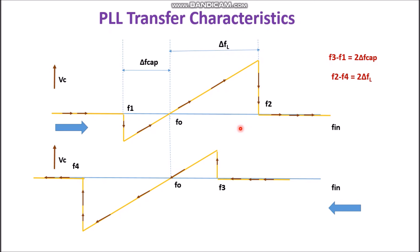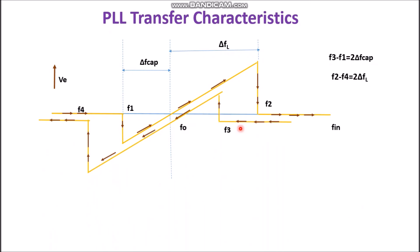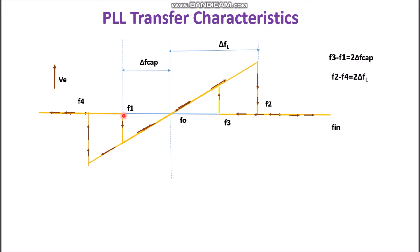Both transfer characteristics can be overlapped to show the combined transfer characteristic we have seen earlier. What we observe is that the PLL cannot acquire a signal outside the capture range — that is, F1 when increasing and F3 when decreasing. But once captured, it will hold on until the signal frequency goes beyond the lock-in range. In order to increase the lock-in range, a larger capture range is required. However, a large capture range makes the PLL more susceptible to noise and undesirable signals. Hence, a suitable compromise is required when choosing the capture range.